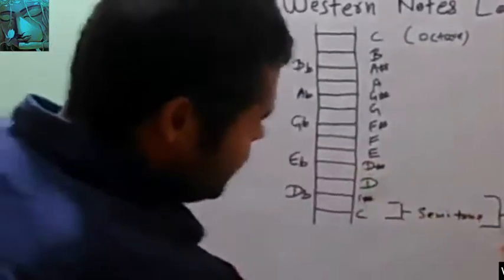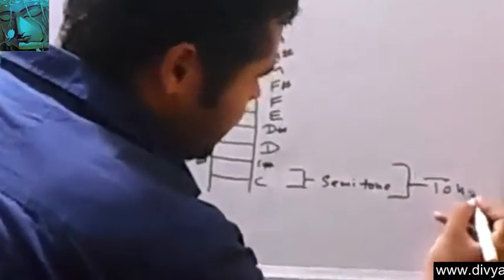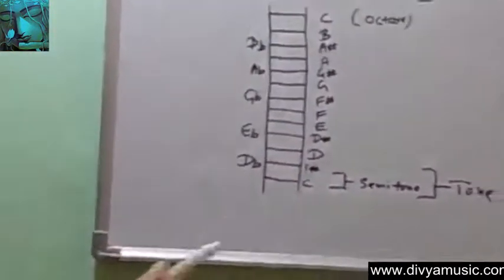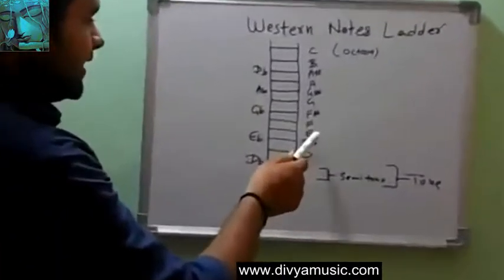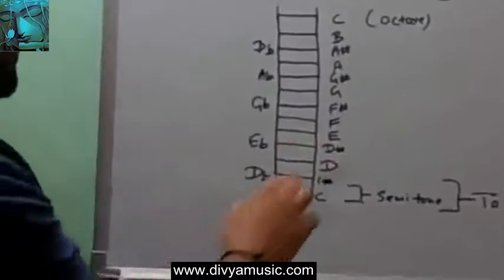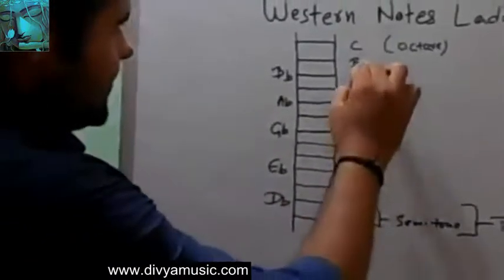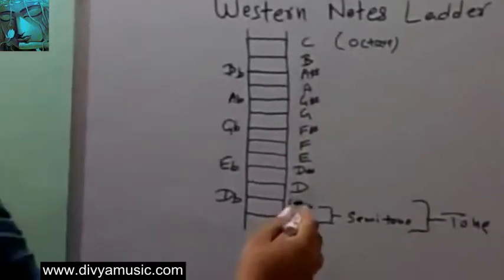This is the full ladder: C, C sharp, D, D sharp, E. We don't have any sharp of E and B. You have to remember this - we don't have any sharp for E and B on the western ladder.